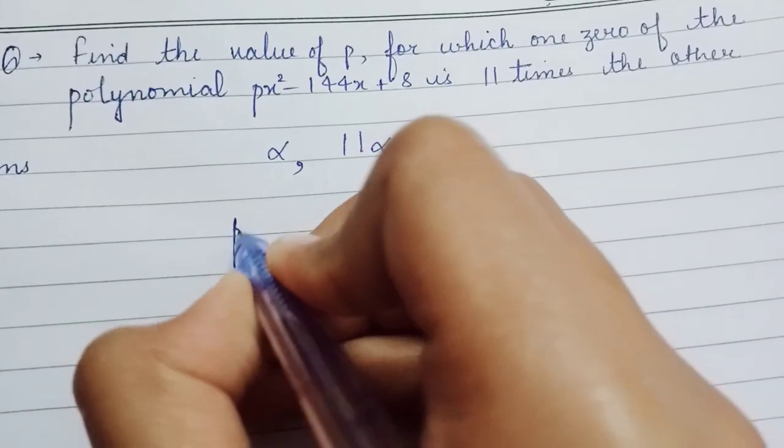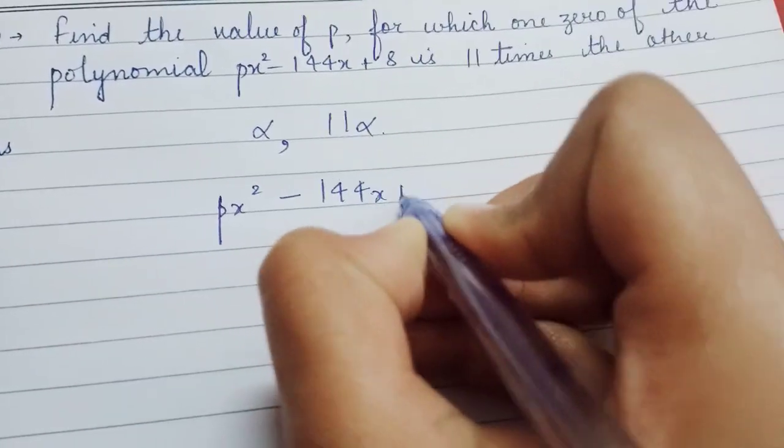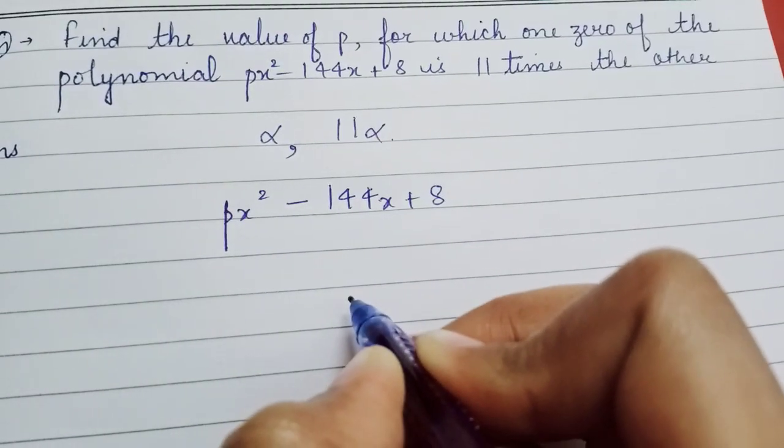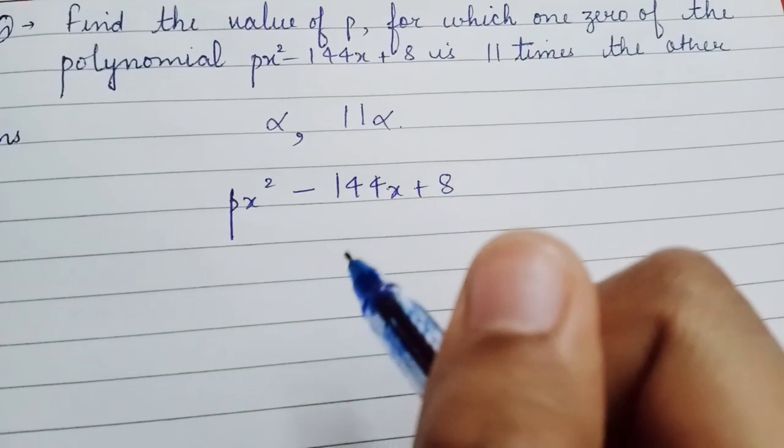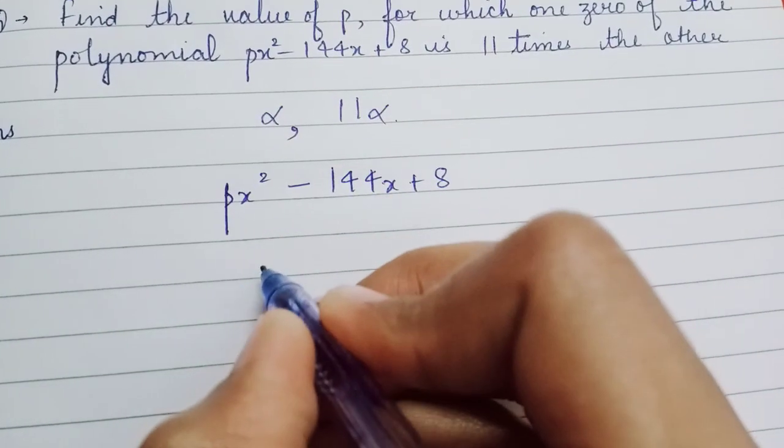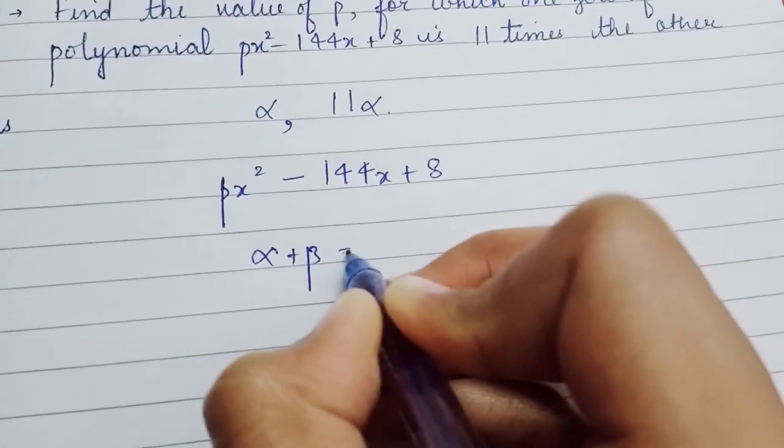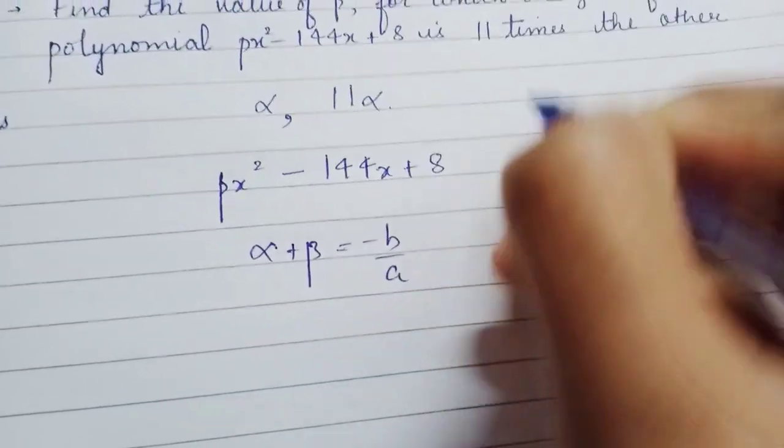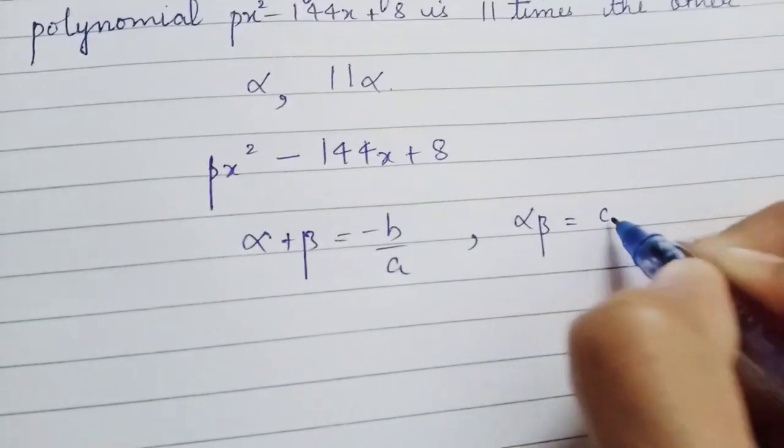The polynomial given is px² - 144x + 8. We know that if there are two zeros of a polynomial ax² + bx + c, then α + β = -b/a and αβ = c/a.